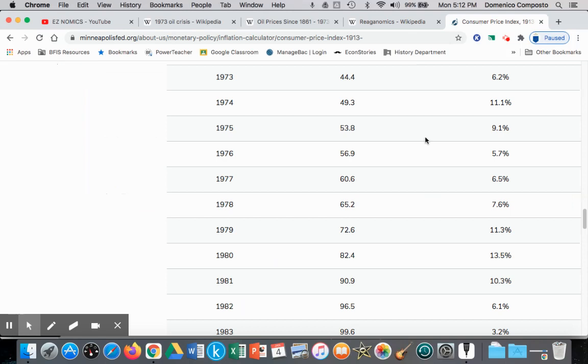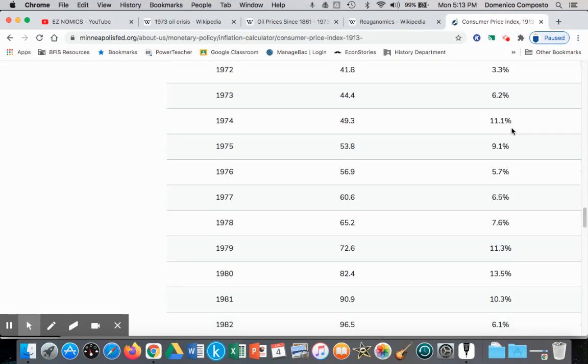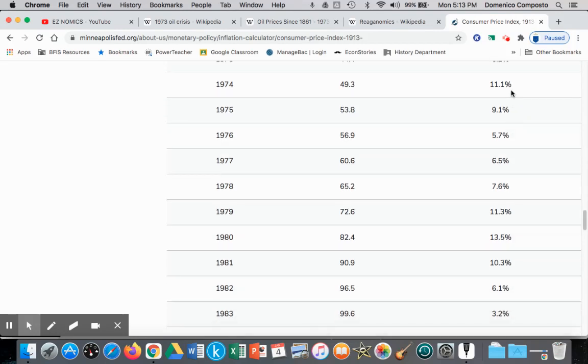If we look at the inflation data, in 1972 it's at 3%, and then it rises to 6%, 11% - that's the oil shock. Dramatic rise in inflation in the United States, and it's sustained high, 11%, 9% in 1975.